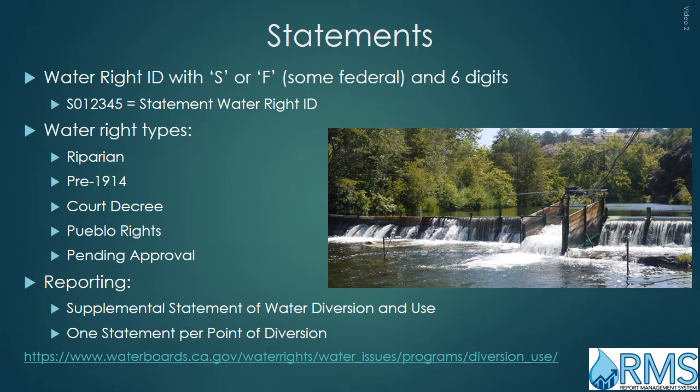Statements have water right IDs that usually begin with an S, followed by six digits. Federal statements begin with an F and end with an S. Statements include reporting for use of water on land that is adjacent to riparian flow, pre-1914 continuous diversions, court decree rights to the water, Pueblo rights, or some water rights pending approval by the Water Board. Statement water right holders file Supplemental Statement of Water Diversion and Use Reports. Additional information may be found at the Water Board's website.